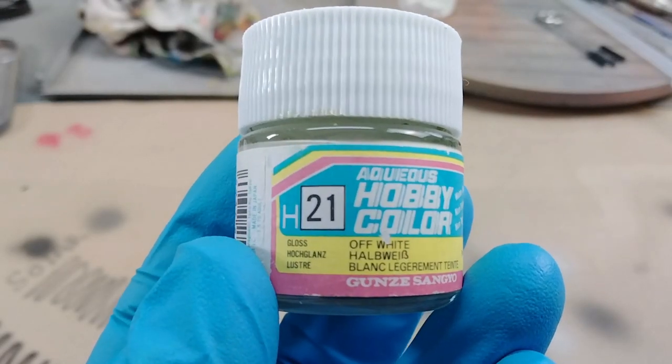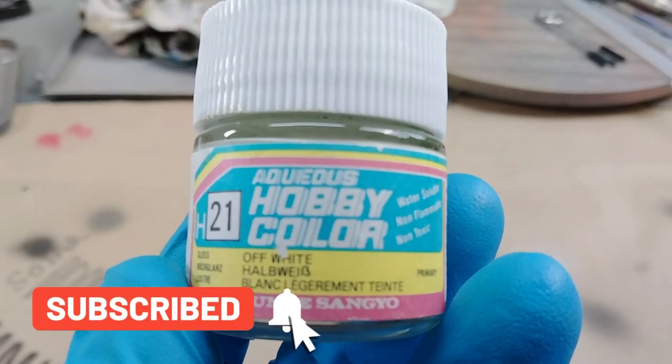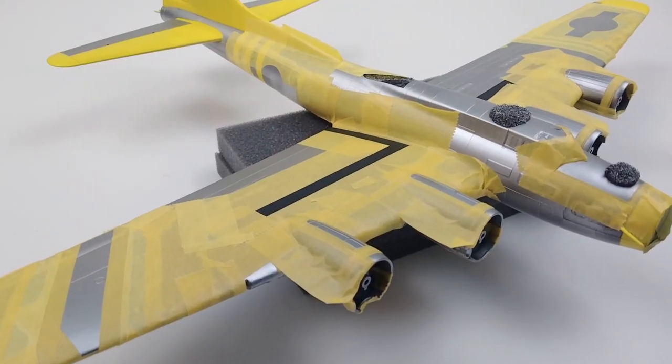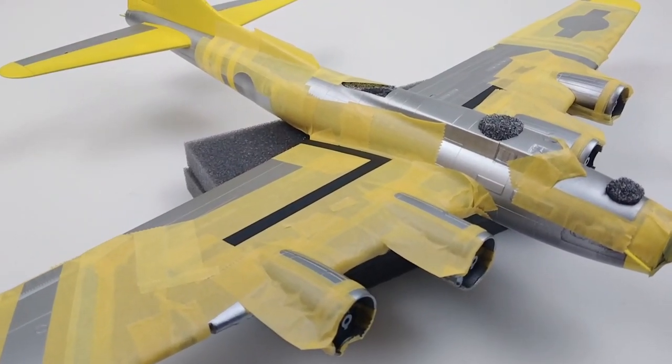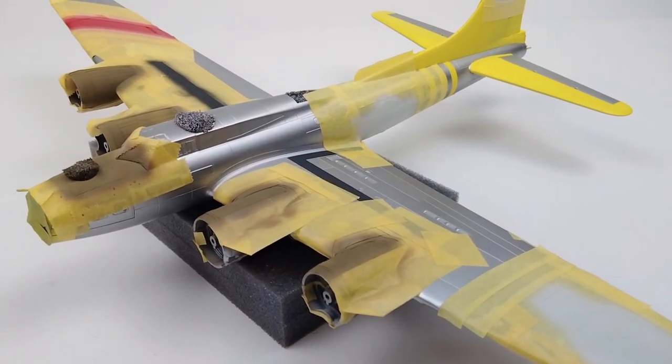I never use white and black for my models. Those colors are too stark and never look right. Instead, I use an off-white for this stage of the markings. This is yet another advantage of painting markings. You can control color, weathering, and even do things like pre- and post-shade.